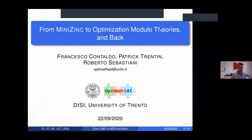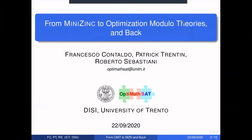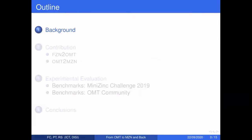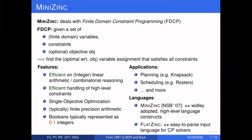Welcome everyone, my name is Francisco Contaldo and I'm here to present: From MiniZinc to Optimization Modulo Theories and Back. This work was done with Dr. Patrick Trentin and Professor Roberto Sebastiani from the University of Trento. We start with MiniZinc, a widely adopted language to define finite-domain constraint problems consisting of variables and constraints, optionally with an objective. The input for constraint solvers is FlatZinc, a translation produced by the MiniZinc-to-FlatZinc tool.